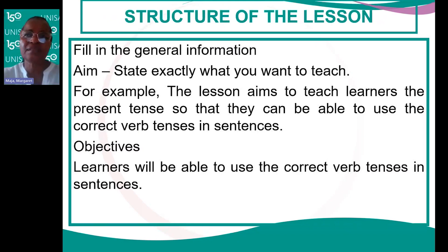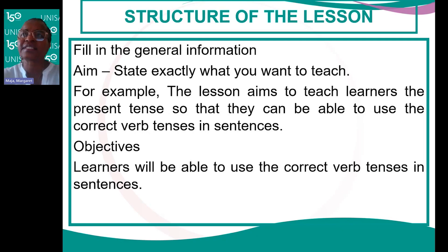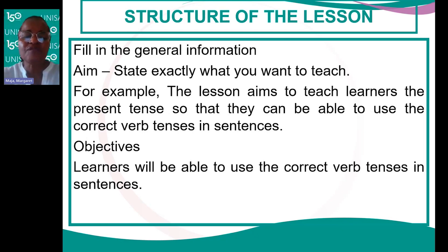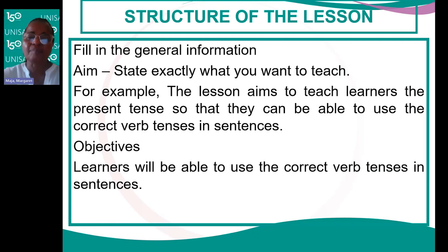You need to complete all the general information in the space provided. When you teach, you need to state exactly what you want to teach. For example, if you want to teach the present tense in English, your aim would be: 'to teach learners the present tense so that they can use the correct verb tenses in sentences.' From the aim you derive objectives — for example, 'learners will be able to use the correct verb tenses in sentences.' You can have more than one objective per lesson, but the aim will be only one.